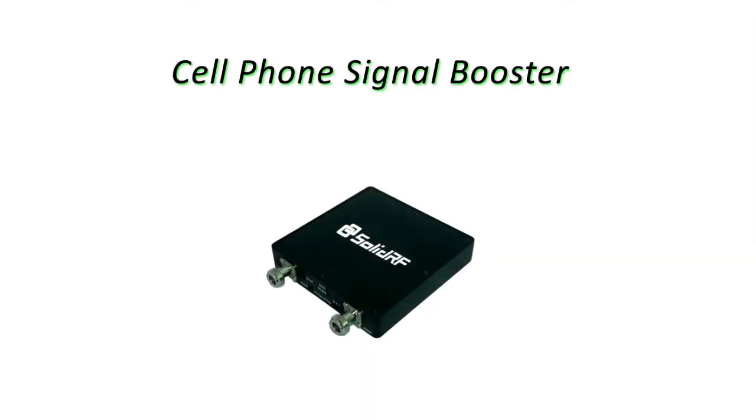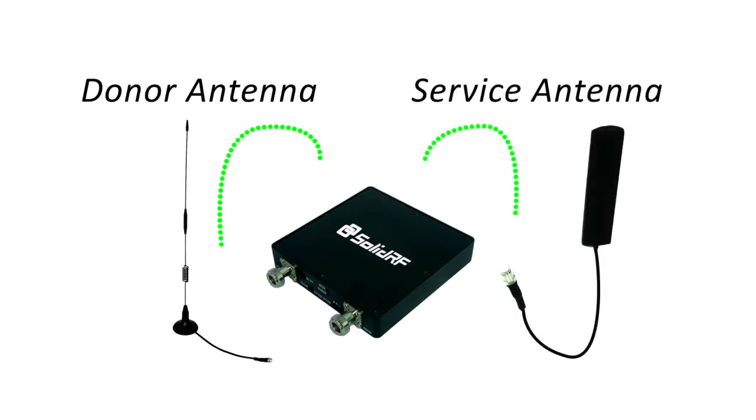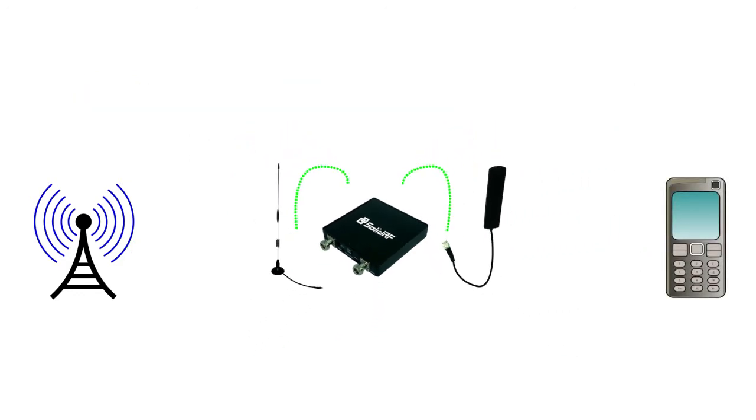A cell phone signal booster, also called a cellular signal repeater or amplifier, usually connects with a donor antenna and a service antenna. The donor antenna transmits and receives signals to and from the signal towers, while the service antenna serves cell phones. The purpose of such a device is to rebroadcast the signals coming from the network provider's signal towers.